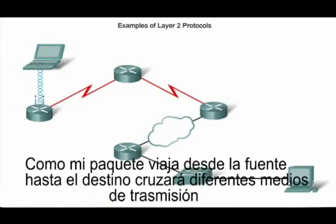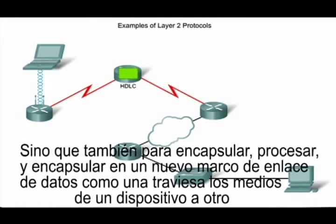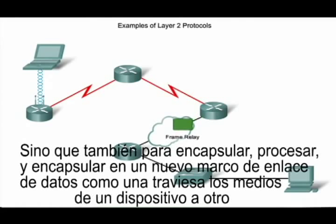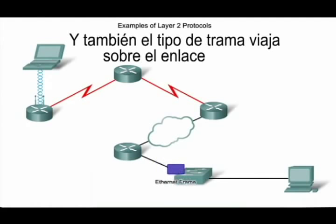As an IP packet travels from source to destination, it will cross devices using different media types. The data link layer is not only responsible for the initial encapsulation of the packet, but also for decapsulating, processing, and encapsulating it into a new data link frame as it traverses the media from one device to another. In this graphic, you can see that the layer 2 media changes from device to device, and so does the frame type used to travel over the links.